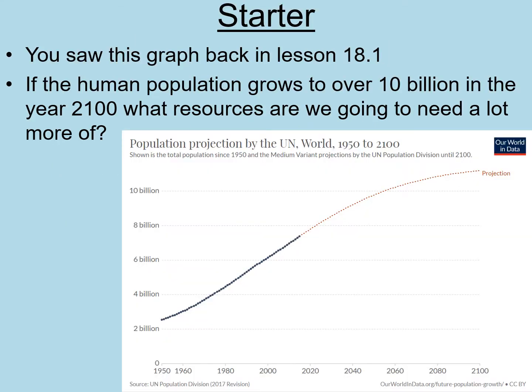We are revisiting a graph from lesson 18.1 about the human population explosion. Along the bottom axis we can see the year, and on the vertical axis the number of humans on the planet. If the human population is going to grow to over 10 billion by the year 2100, what resources are we going to need a lot more of? Pause the video and think or write a couple of bullet points.